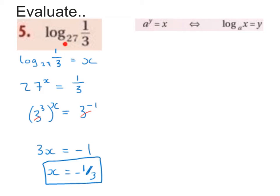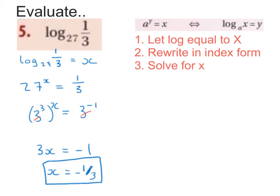Evaluate log base 27, 1 over 3. There are three steps involved in evaluating logs. Step 1: let the log equal to x. Step 2: rewrite in index form. Step 3: solve for x.